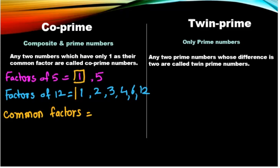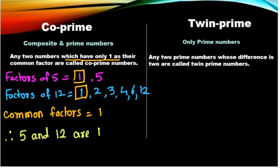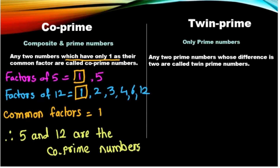Now we find the common factors between 5 and 12. We get only one common factor, which is 1. Any two numbers which have only 1 as their common factor are called co-prime numbers. That is why 5 and 12 are co-prime numbers.